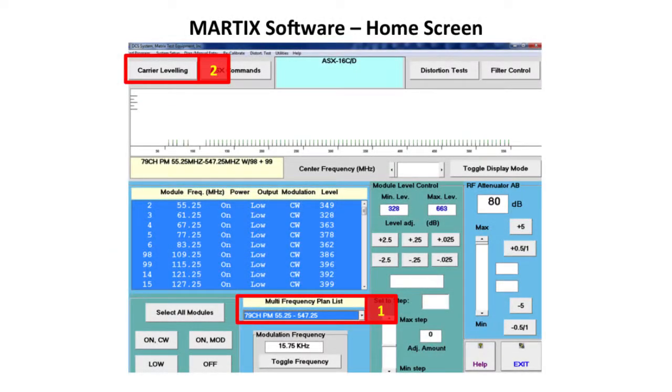The first software screen sets the frequency plan to 79 analog channels ranging in frequency from 55.25 MHz to 547.25 MHz.